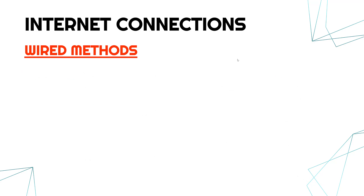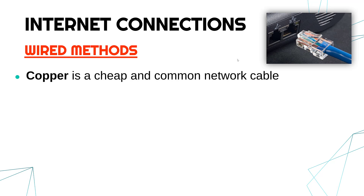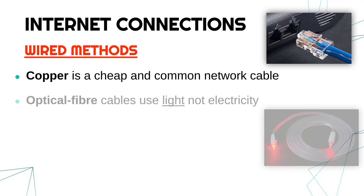Let's now apply some of these words to different ways to connect to the internet, starting with wired methods. Copper is really common — it's used in ethernet cables, as shown in the top right. Copper is used because it's cheap and transmits electricity really well. Copper cables use electricity to send the binary messages up and down the cables.